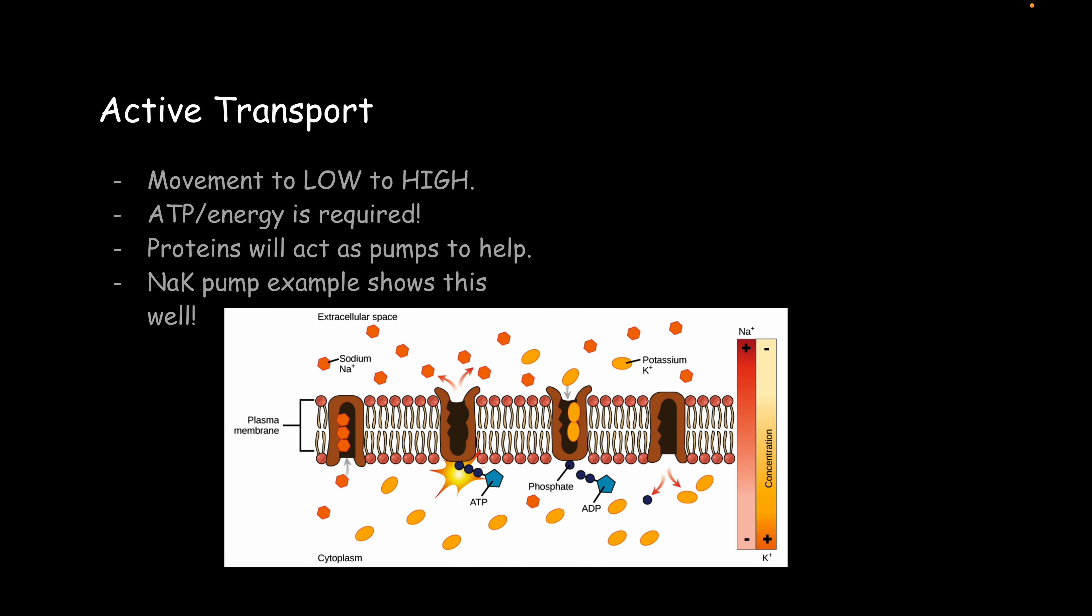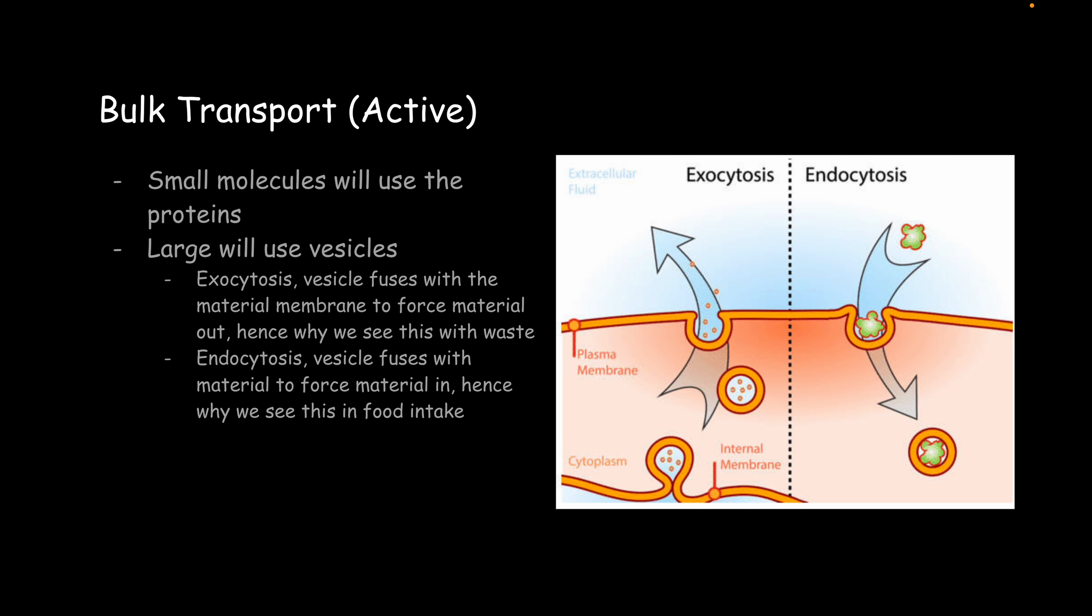Now, we have active transport. This is movement from low to high. We're moving against that concentration gradient. ATP or energy in general is required here. So, proteins will act as pumps here. We also have vesicles, but we'll get to that in a second.